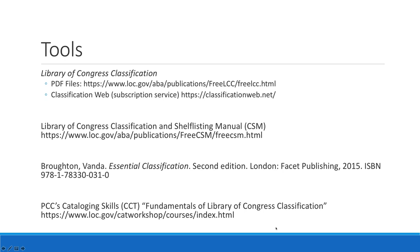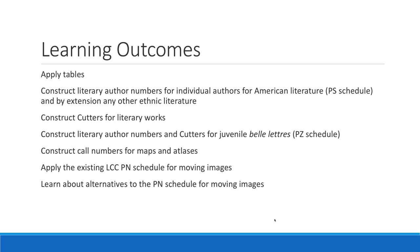Learning outcomes today: we will talk about tables and how they are applied. You'll see how we construct literary author numbers for individual authors for American literature, and by extension for other nationalities or ethnic literatures. We'll cover how to construct cutters for literary works, literary author numbers and cutters for juvenile works (belles-lettres) in the PZ schedule, call numbers for maps and atlases, and applying the LCC PN schedule for moving images as well as an alternative approach.